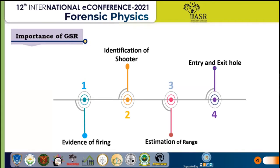GSR is one of the very crucial pieces of evidence associated with shooting incidents, as it helps to explore and provide an associative link. Just as it is evidence of firing, it helps to identify a shooter or persons involved in a shooting case. Quantitative and qualitative analysis also help for estimation of range as well as to confirm the entry and exit holes.